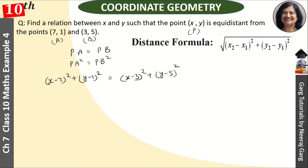Now we apply the (a - b)² identity. This becomes x² - 14x + 49 plus y² - 2y + 1.